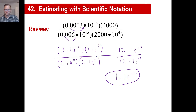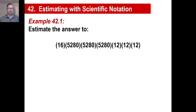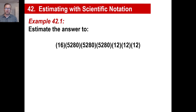We're going to do some calculations with gigantic numbers and get a basic estimate with no calculator at all using scientific notation. Here's an example of typically the one you'll see. Estimate the answer to that. All we need to do is take each one of these numbers and put them in scientific notation — approximately. In other words, we're looking at about 20 here, about 5,000 for each of these, and about 10 for each of these.